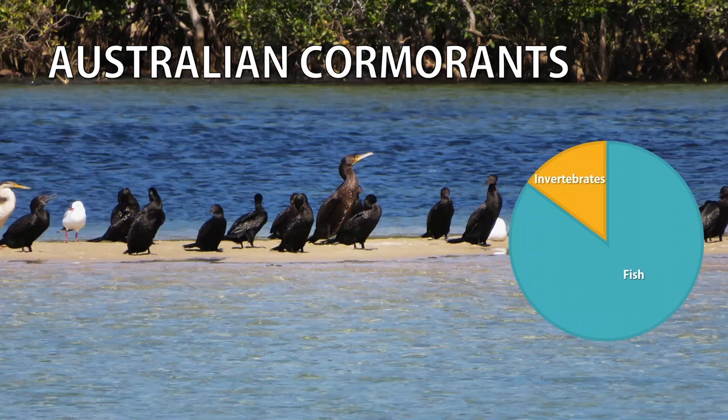The word cormorant is derived from Latin, which translates back into English as 'sea raven.' Outside Australia, cormorants are sometimes referred to as shags. The great thing about cormorant identification is that males and females look the same, which means we have less to memorize.